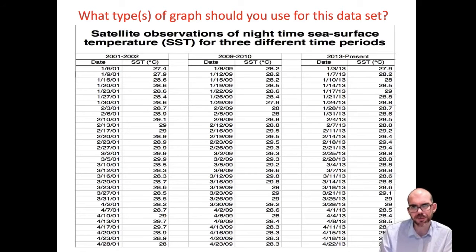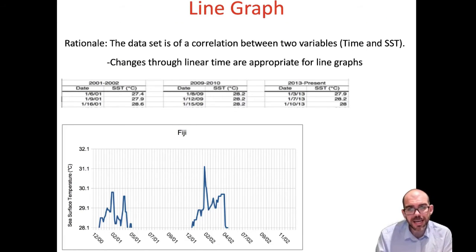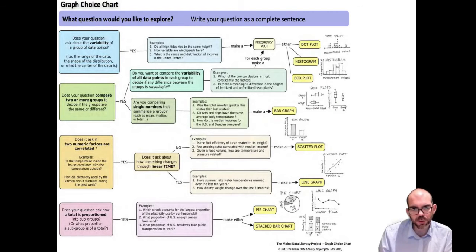Let's do something a little different this time. Imagine you're presented this data set. This is showing satellite observations of nighttime sea surface temperature for three different time periods. What kind of a graph would I use for this? With a data point per date. I would use a line graph for this. Anytime I'm looking at change over time, or a correlation between two values, I want to use a line graph.